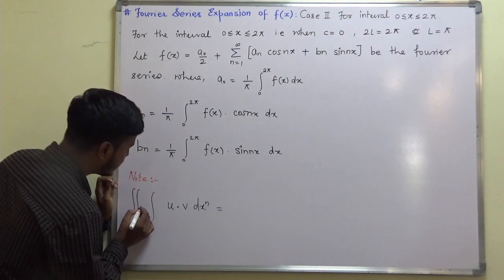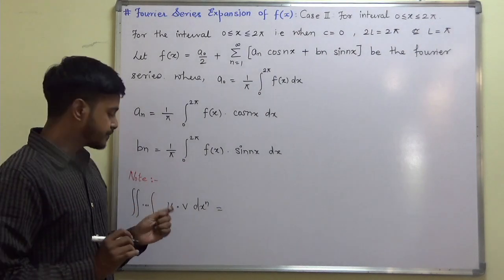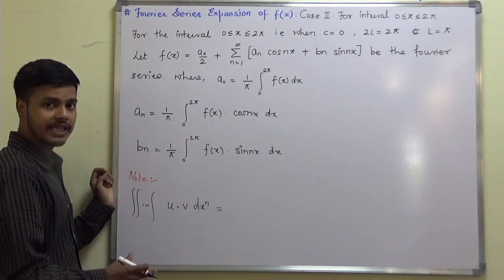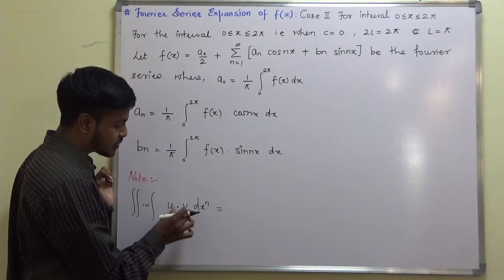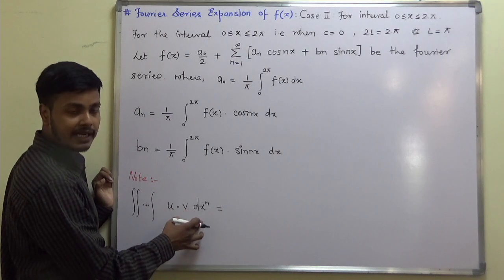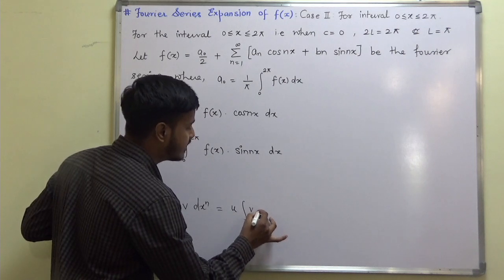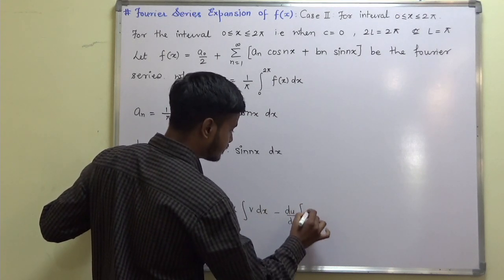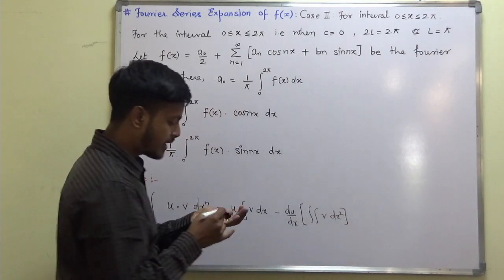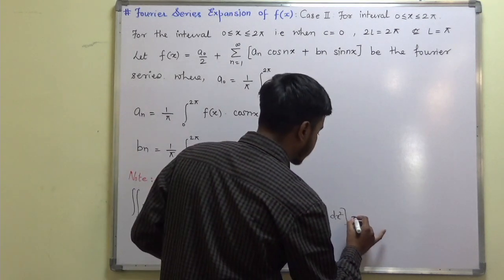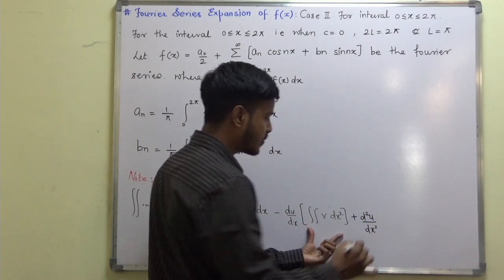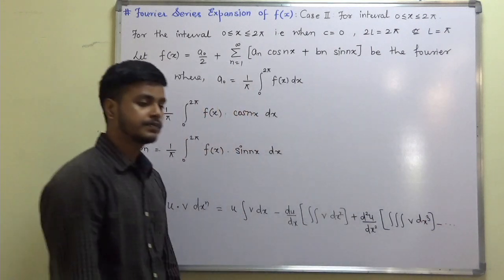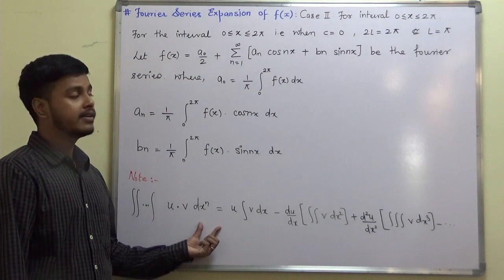In this learning video, I am introducing one important formula. This formula is applicable when one function is algebraic and the other function is any other function. This gives us nth-time integration by parts of u into v. The integration can be written as: first function times integration of second, minus derivative of first times double integration of second, plus second derivative of first times triple integration, and so on. We will make use of this formula in the very next example.